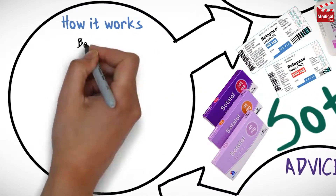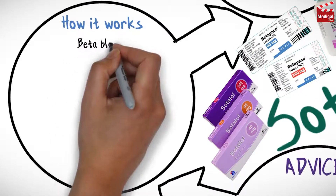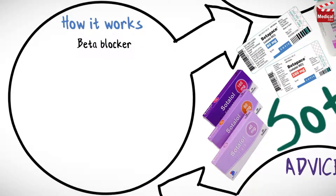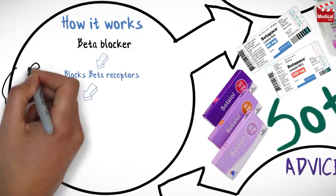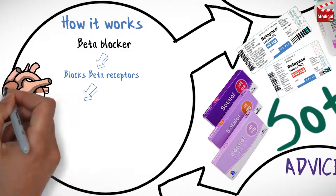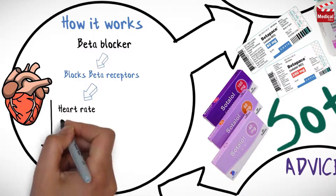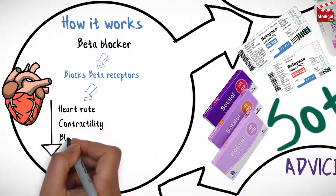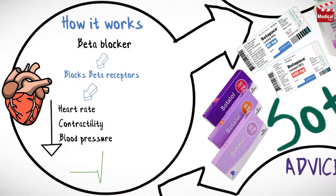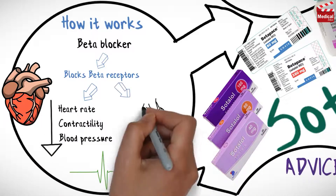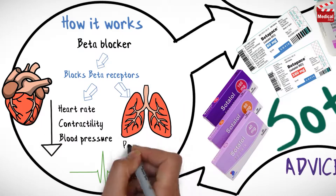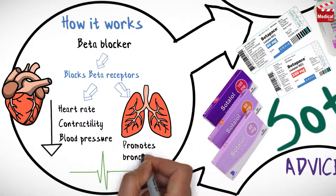Sodalol belongs to a category of drugs called beta-blockers. It blocks beta-receptors, primarily affecting the cardiovascular system, decreasing heart rate, contractility and blood pressure, and also affects the lungs and promotes bronchospasm.